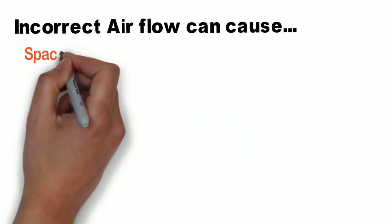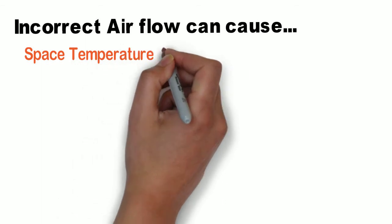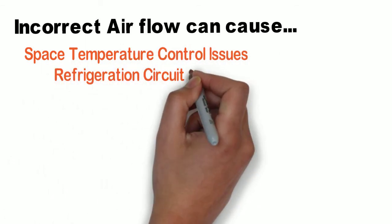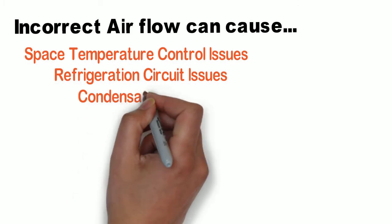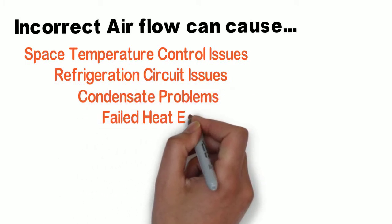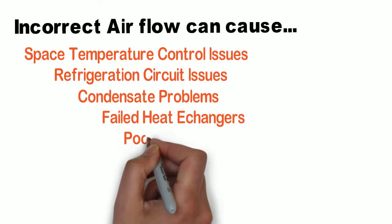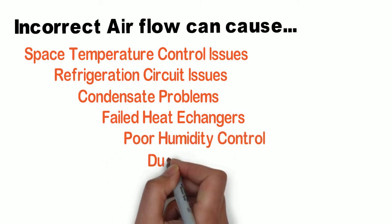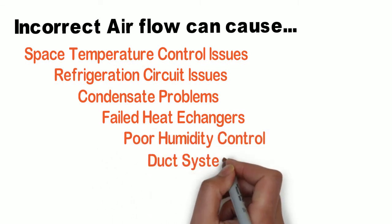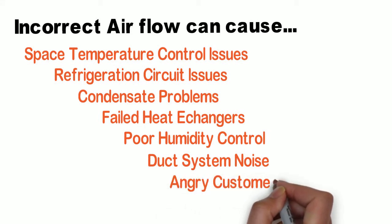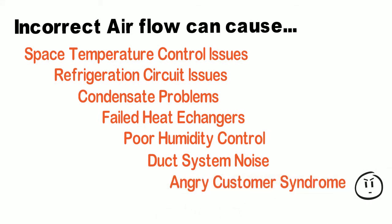Incorrect air flow can cause space temperature control issues, refrigerant circuit issues, condensate problems, failed heat exchangers, poor humidity control, duct noise, and worst of all, angry customer syndrome.